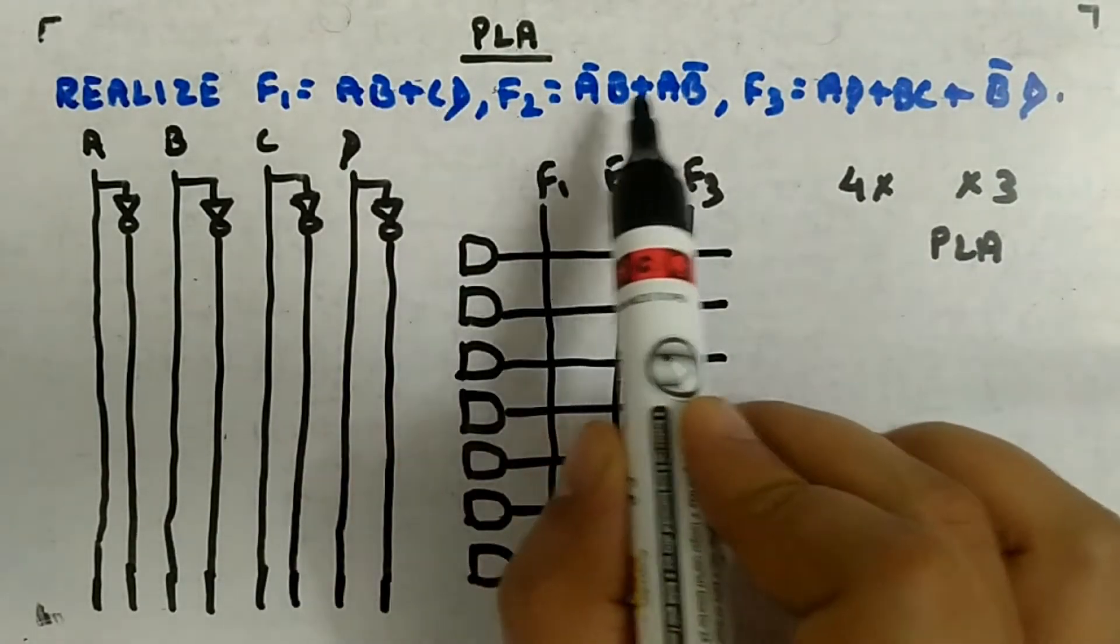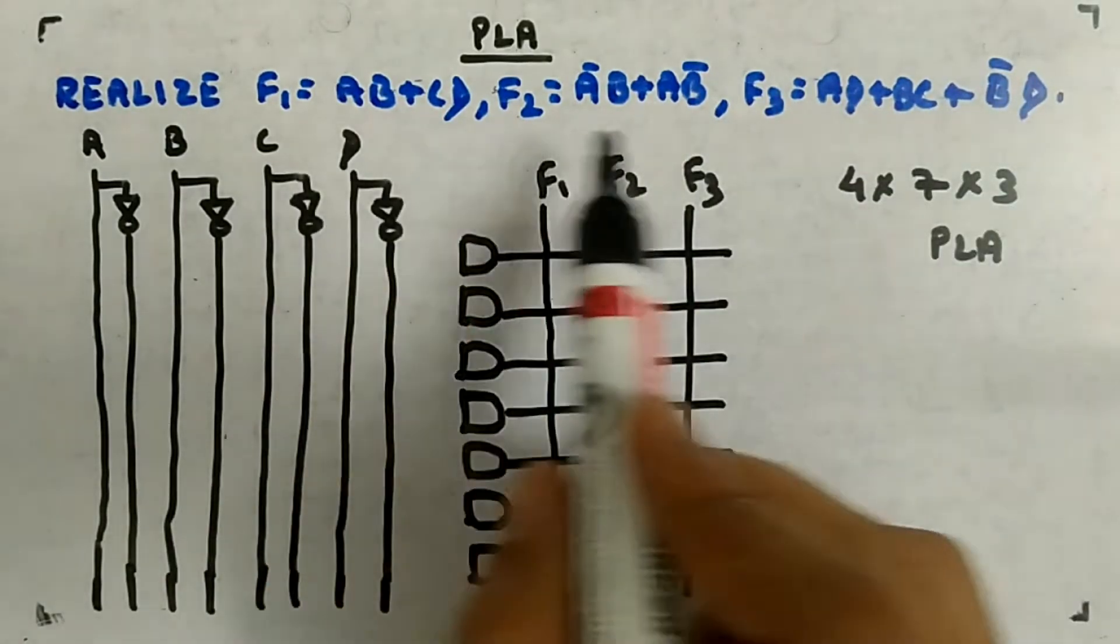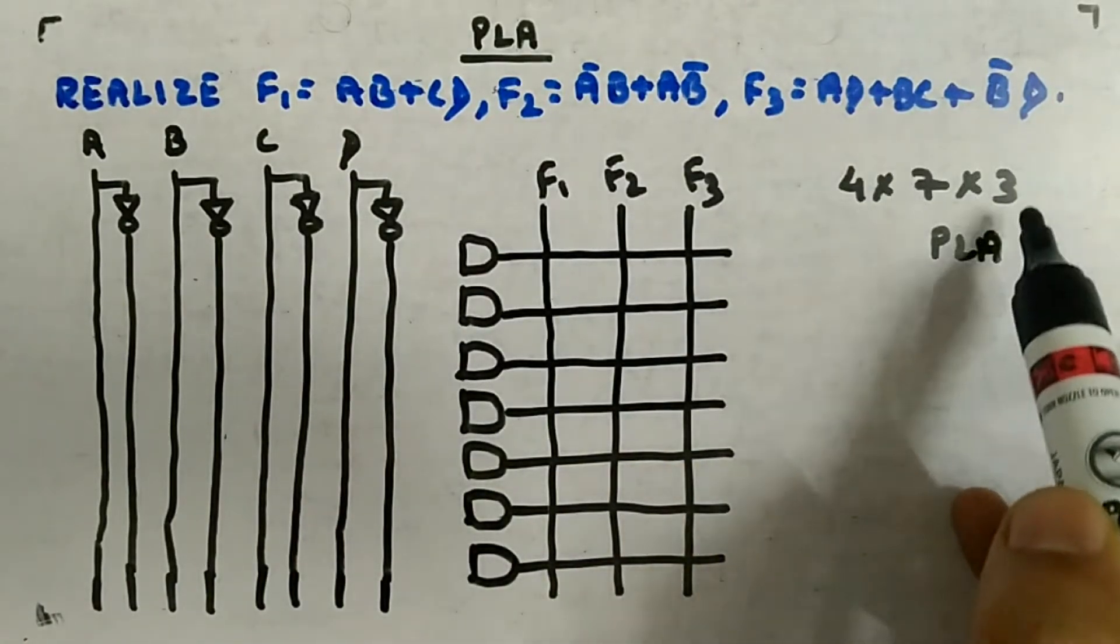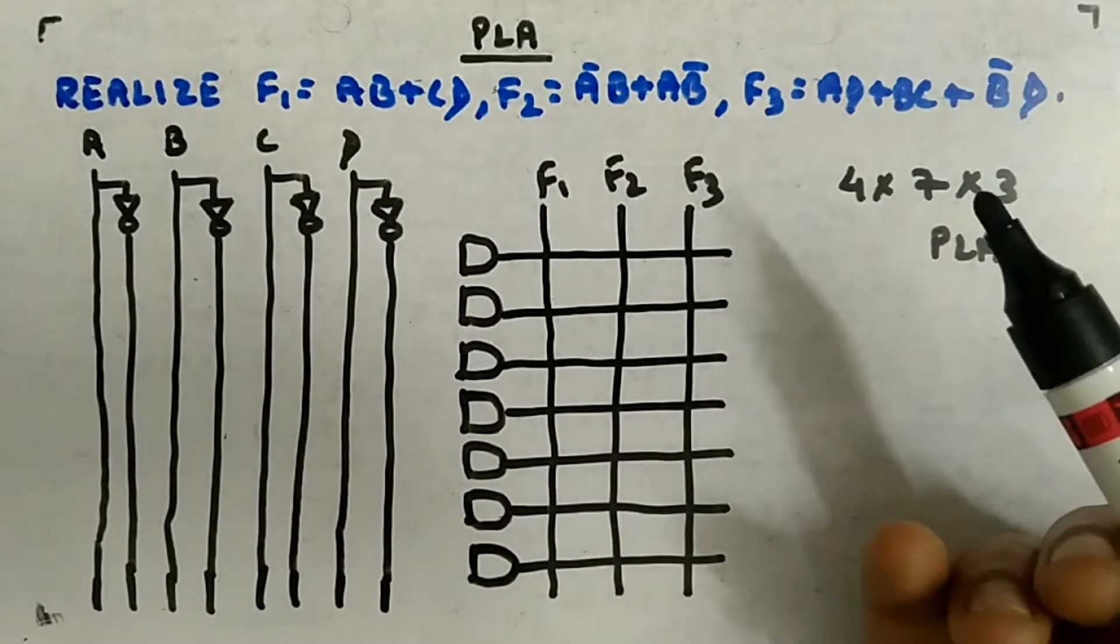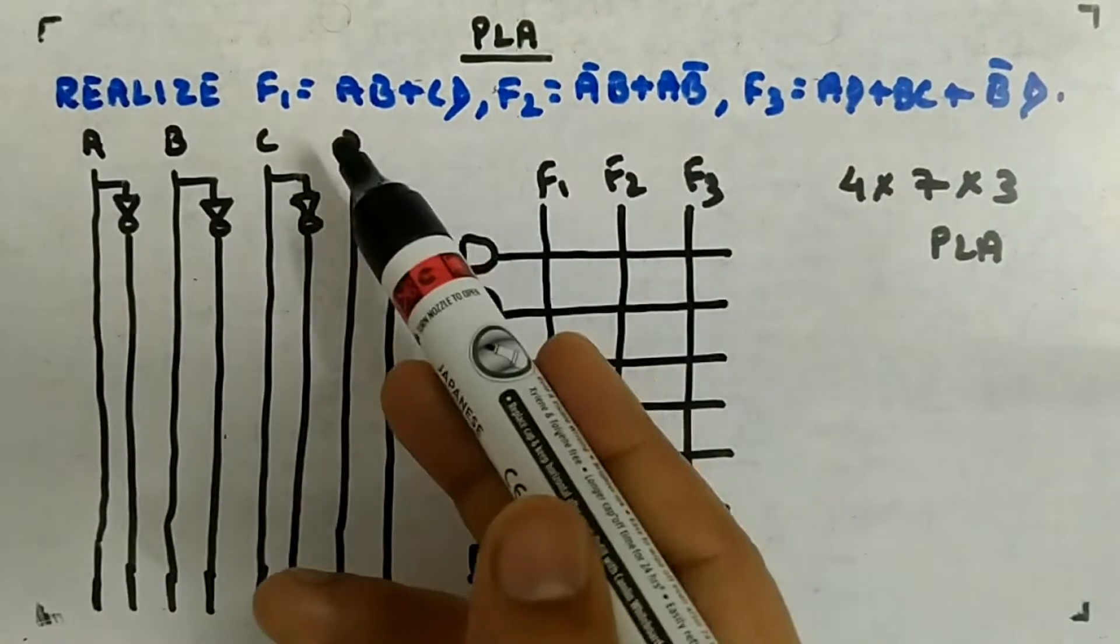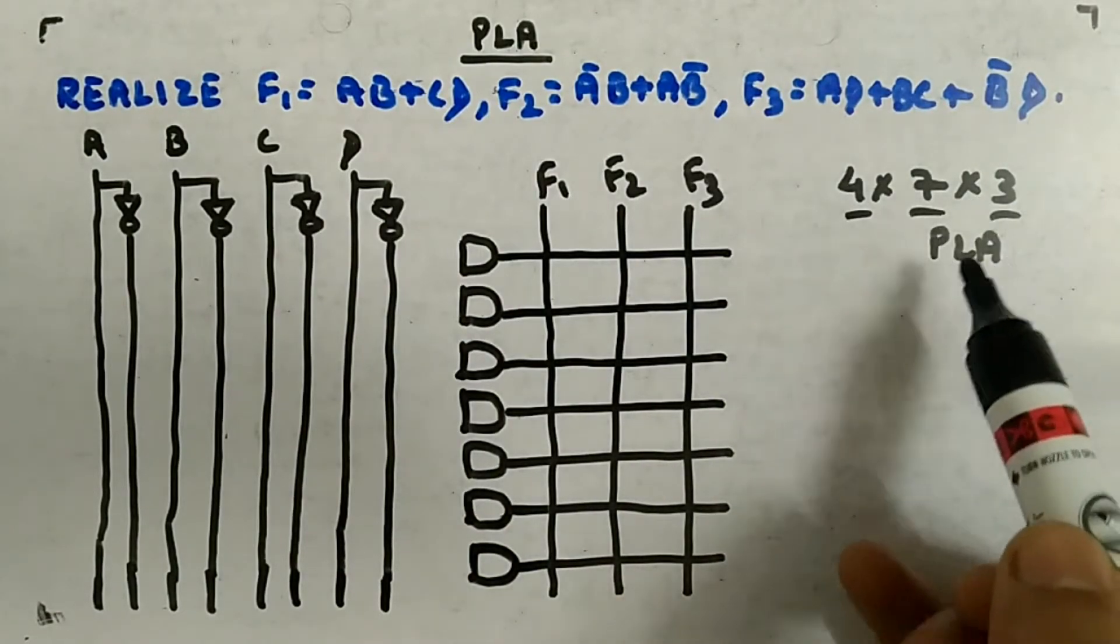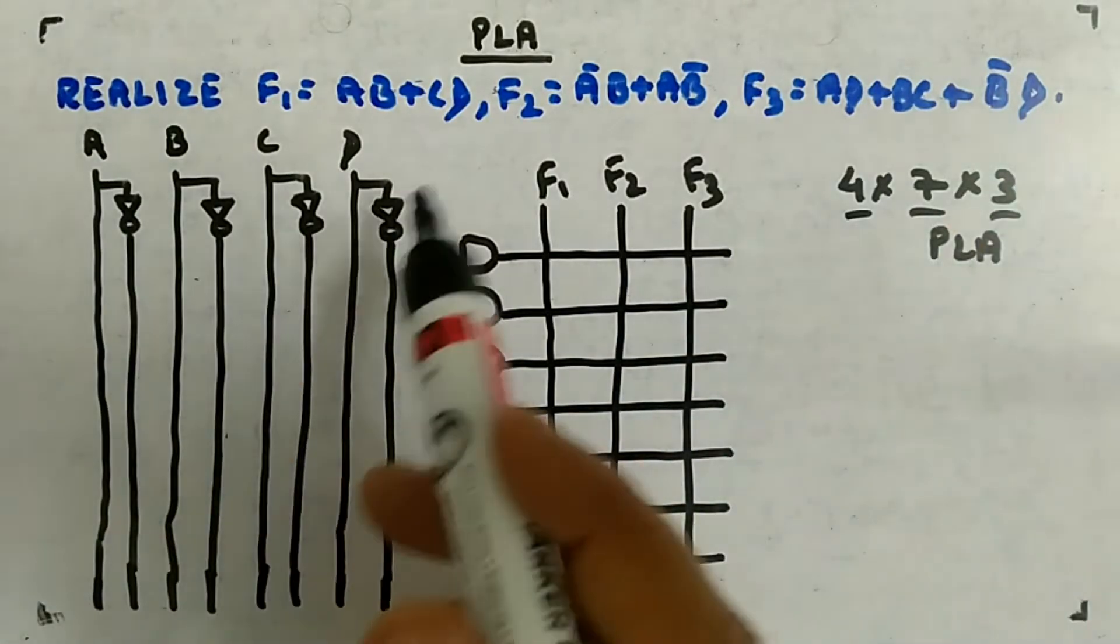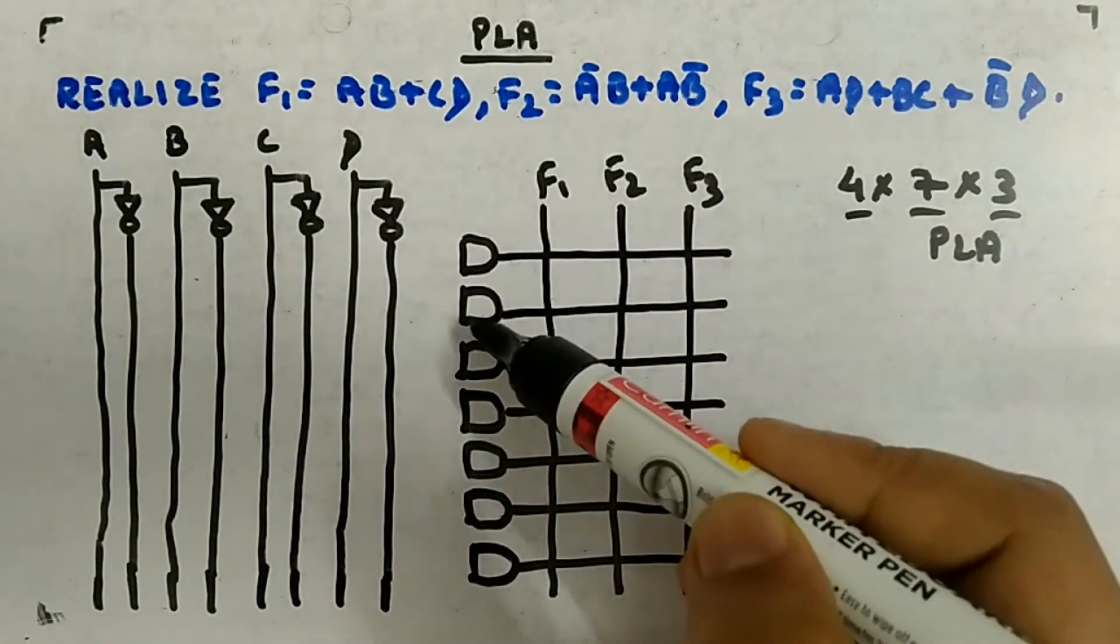How many AND terms do I need? One, two, three, four, five, six, seven. So I can design these three functions just by using a single 4×7×3 PLA. You are not given the PLA; you decided you can use any size of PLA. You saw the three functions and you decided how many inputs, outputs are required, and the AND gates. Based on that, you chose a PLA.